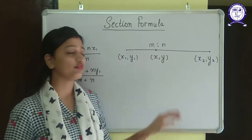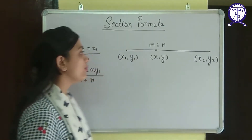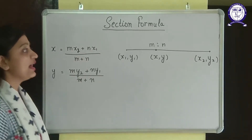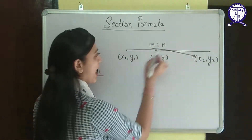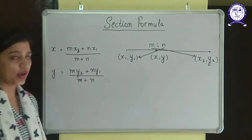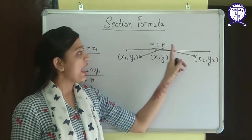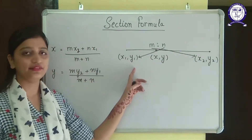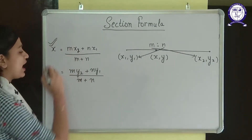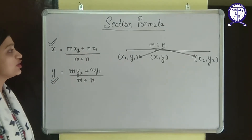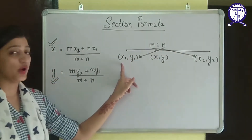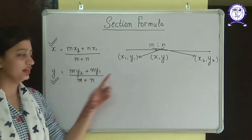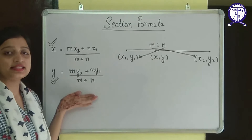The formula to find the coordinate of the point of division is: x equals m into x2 plus n into x1 divided by m plus n. Similarly, y equals m into y2 plus n into y1 divided by m plus n. The method to memorize this formula is that m is multiplied with x2 and y2 (the second point's coordinates), and n is multiplied with x1 and y1 (the first point's coordinates).